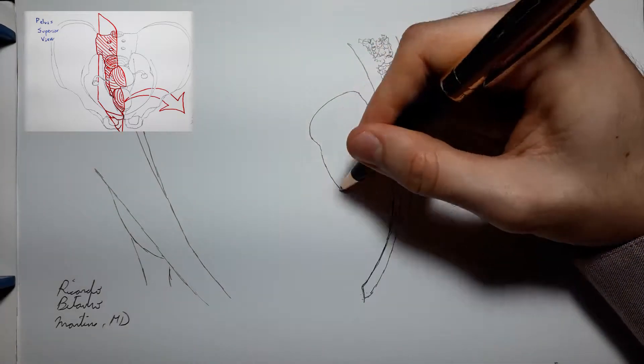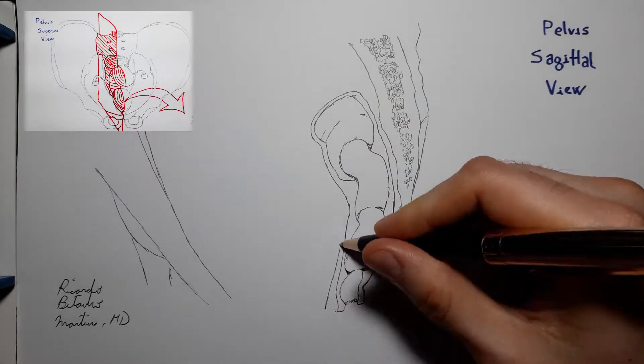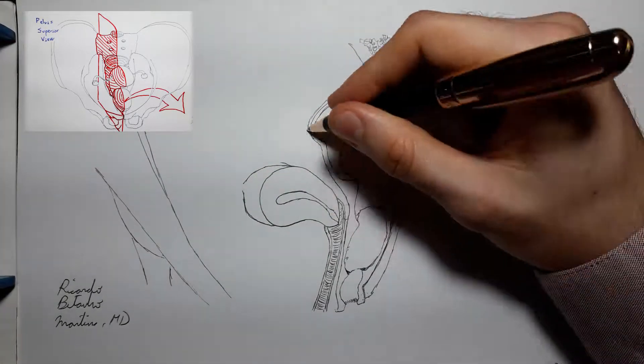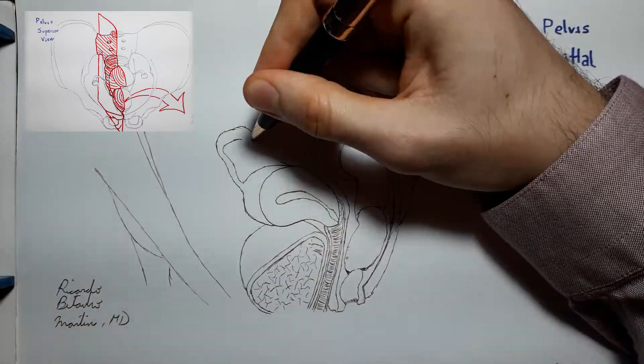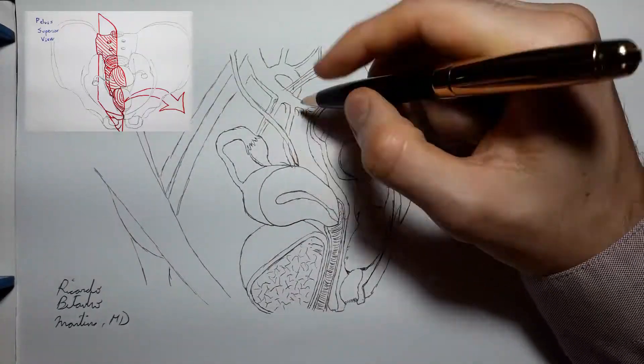The peritoneum is the serous membrane that lines the abdominal cavity and contains the abdominal organs, at least the intraperitoneal ones. The vast majority of the small bowel, for example, is intraperitoneal, and therefore enveloped by the peritoneal membrane.